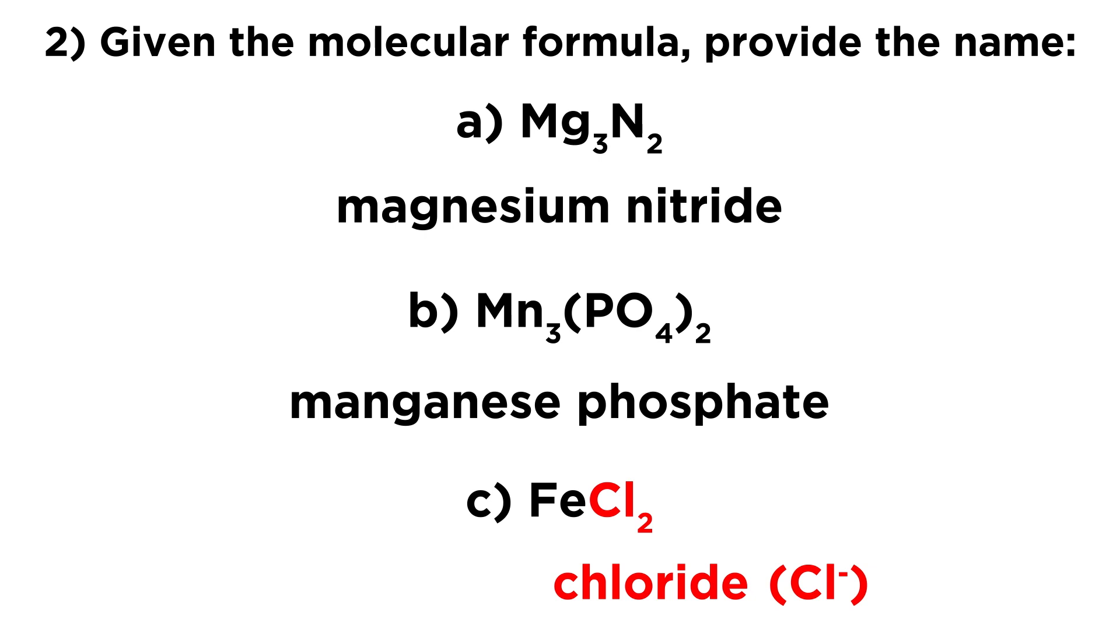So that totals to a minus two charge overall in that formula unit. So in order to balance out the minus two charge to generate a neutral compound, we are going to need to have iron two plus, or iron in oxidation state two. That means this must be iron two chloride, as opposed to iron three chloride, which would have to be FeCl3.